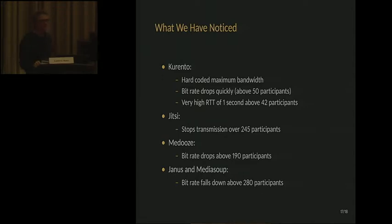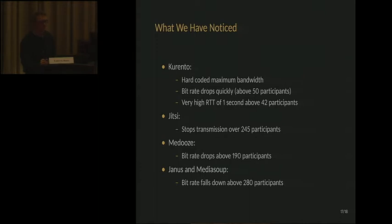The outcome of this load test: Kurento has a hard-coded maximum bandwidth, the bitrate drops very quickly, and it is not able to manage more than 150 participants. Jitsi stops transmitting when going over 245 participants. Medooze, Janus, and Mediasoup all three are able to reach the target load. The bitrate drop comes quicker for Medooze than for Janus or Mediasoup, which are able to maintain a high bitrate for longer with more participants.